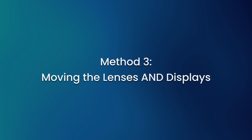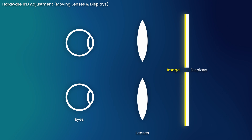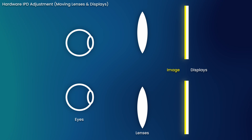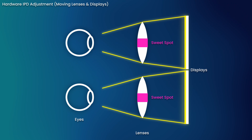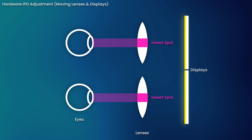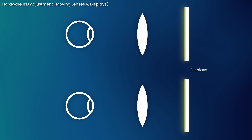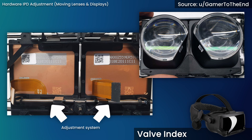Moving the lenses and displays: this method requires that the headset has two display panels rather than a single one, and moves both the lenses and displays while adjusting the IPD. This ensures the sweet spot stays aligned with your eyes and makes sure you are making full use of the display panel, no matter how wide apart your eyes are. You can find this system on headsets like the Valve Index.